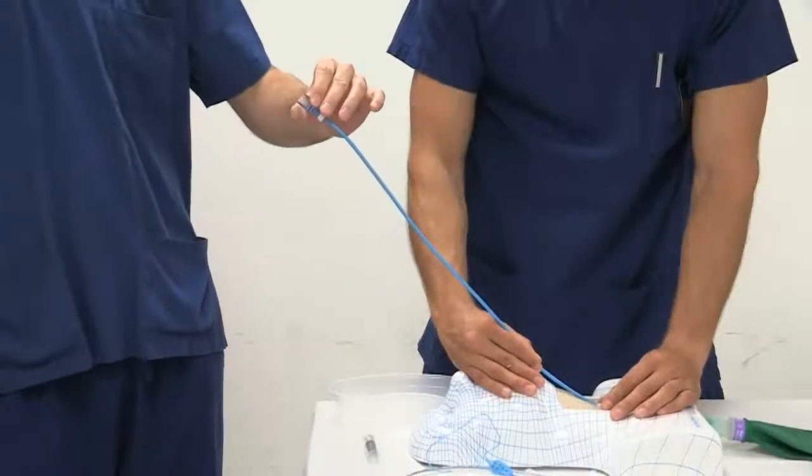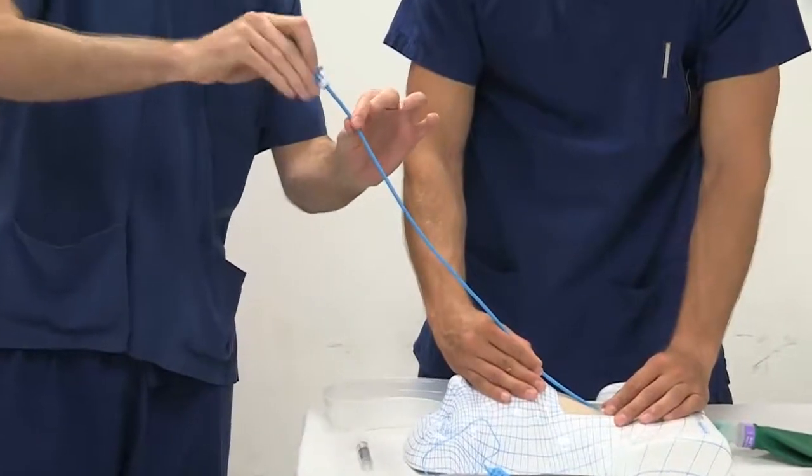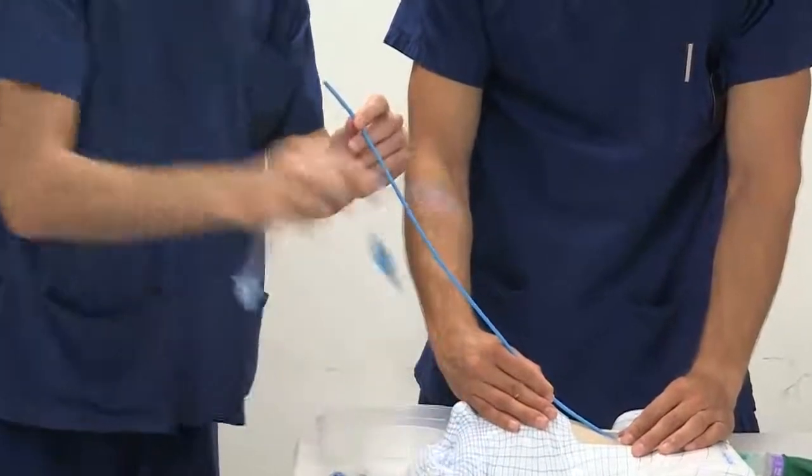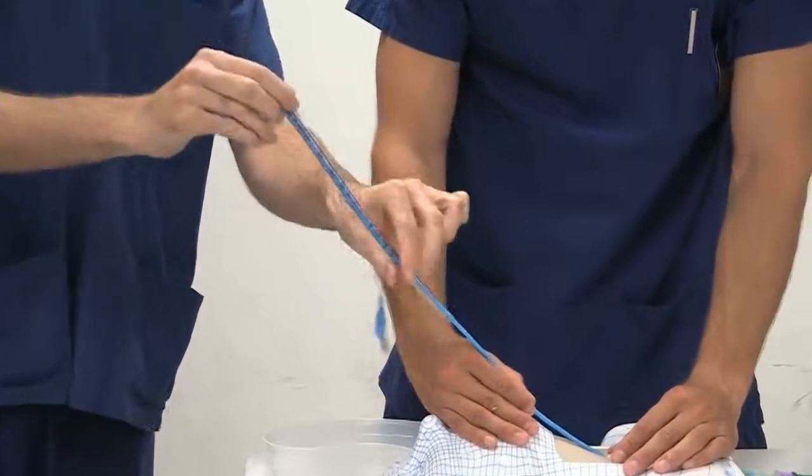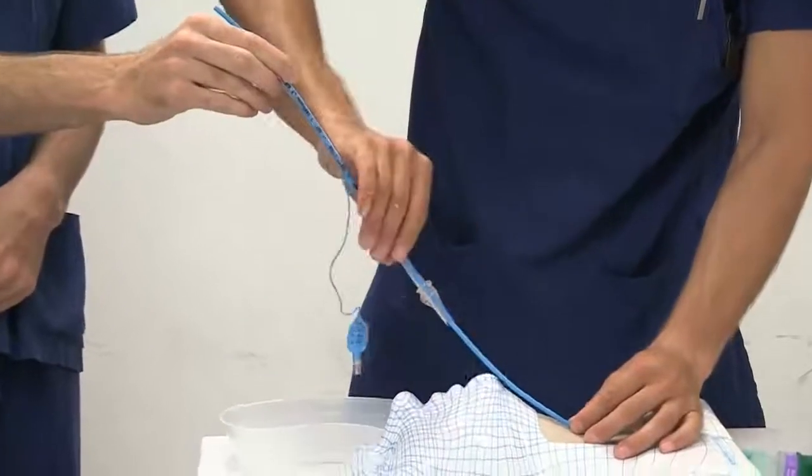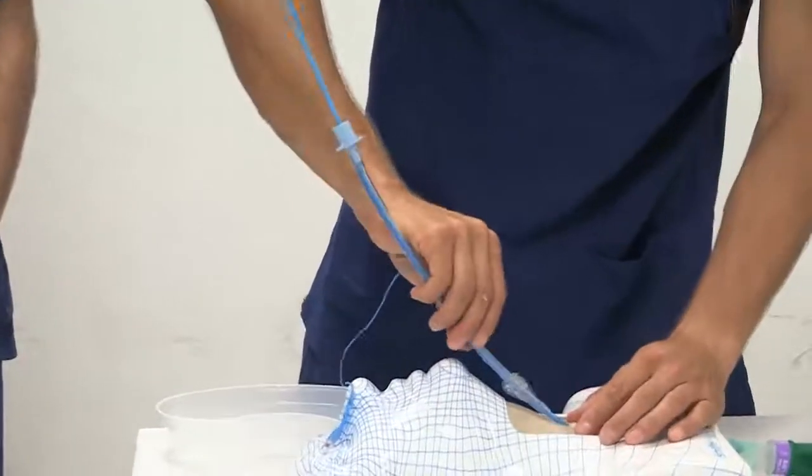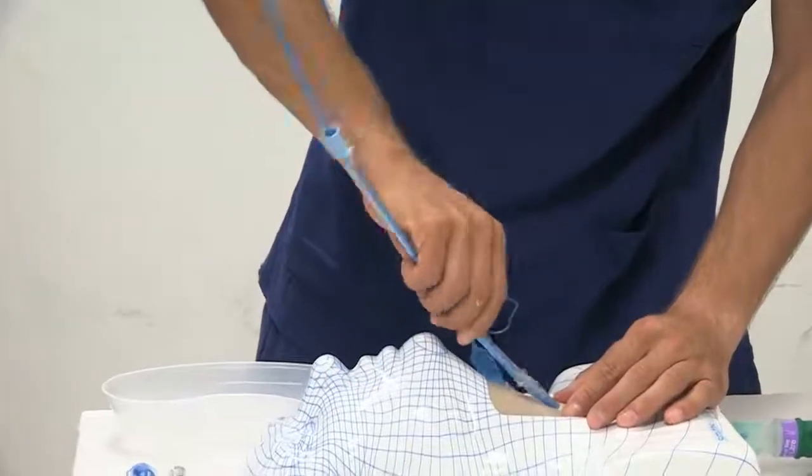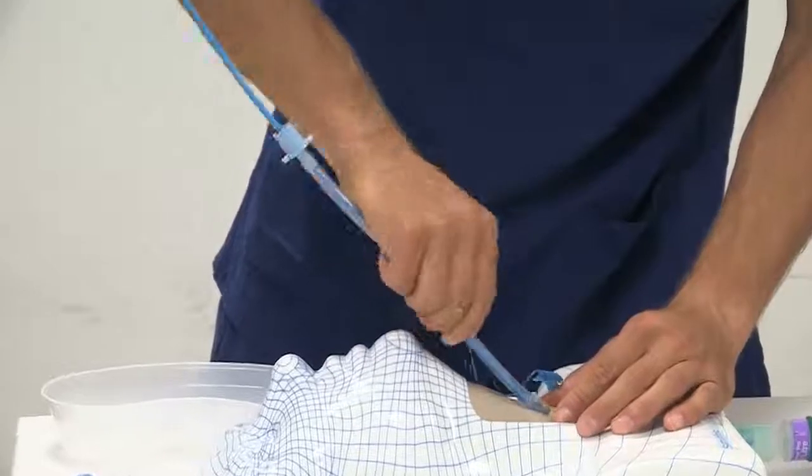A size 6 endotracheal tube is then advanced over the bougie. While the non-dominant hand stabilizes the trachea, the dominant hand guides the tube using a continual 360 degree rotation technique to allow for smooth insertion of the tube into the airway.